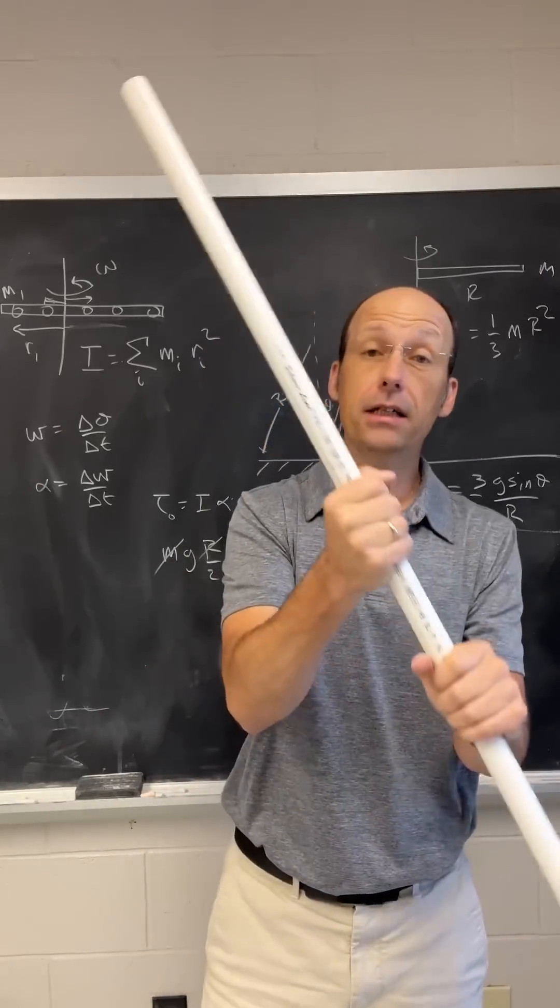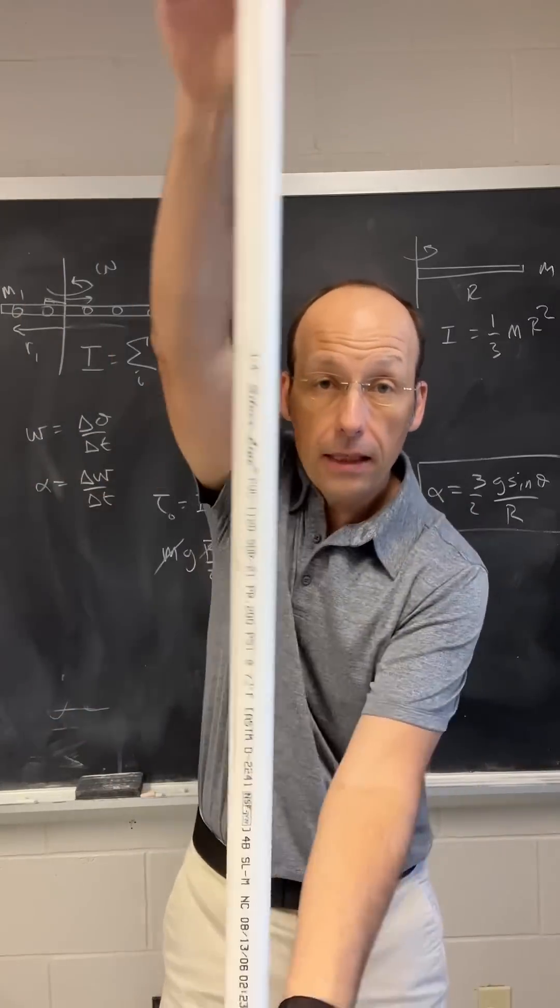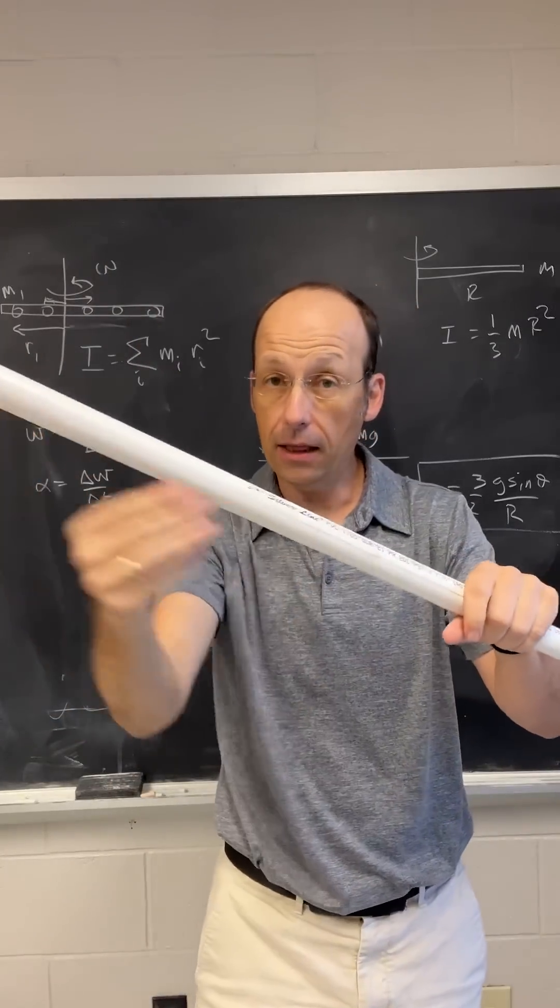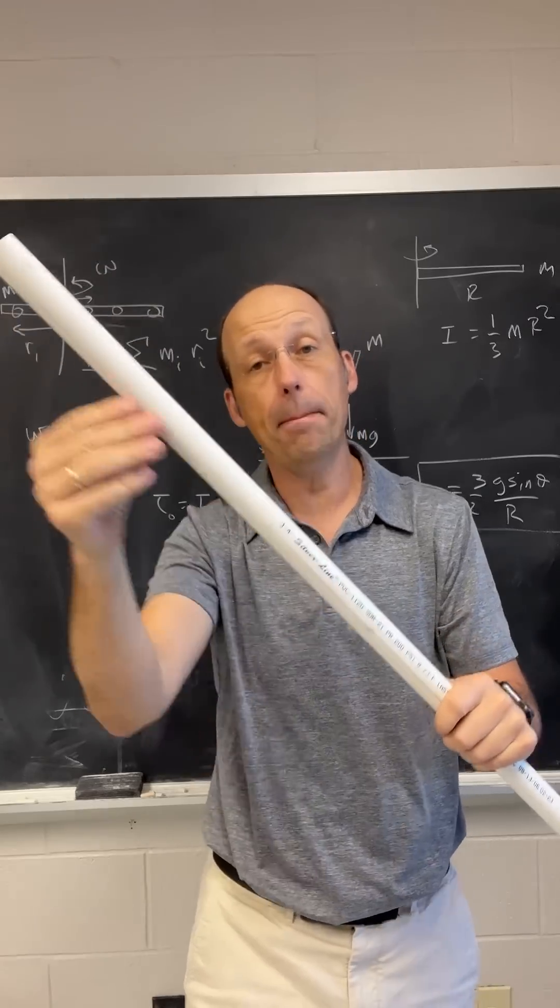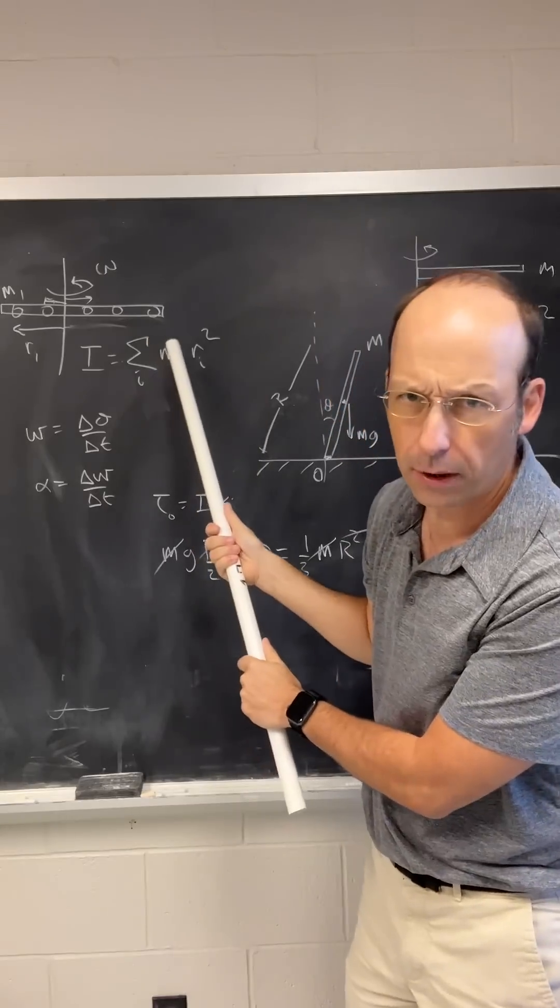So that's because of a property called the moment of inertia, which depends on both the length of an object and the mass. It depends on how far that mass is from the point of rotation. You could calculate that. I have an equation here, but you don't want to calculate it. That's fine.